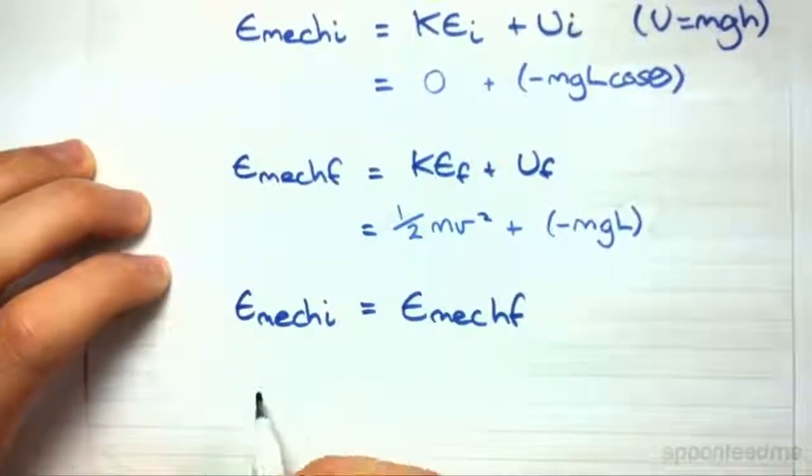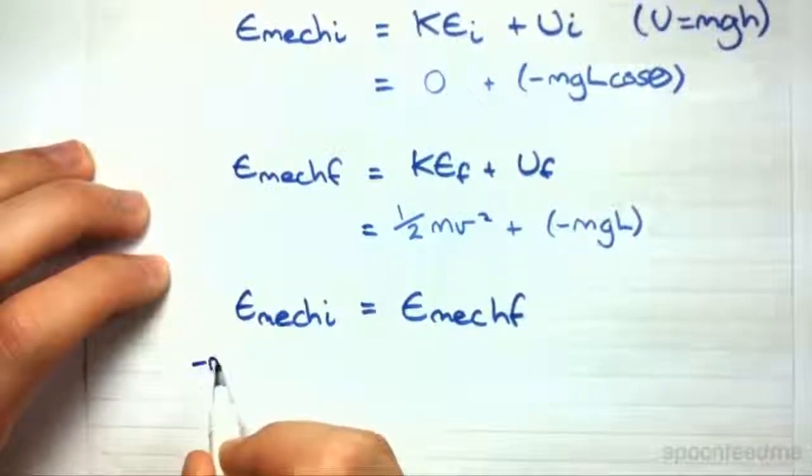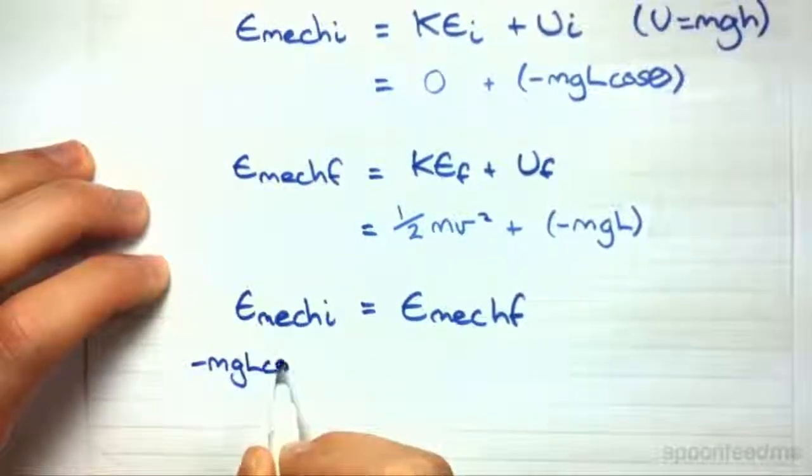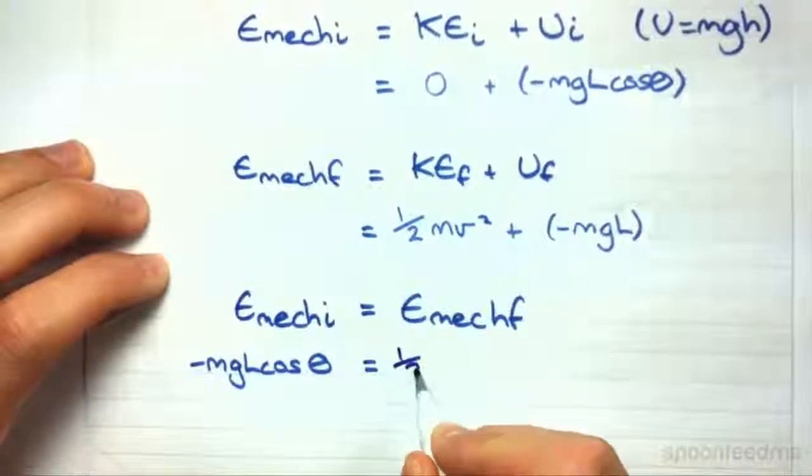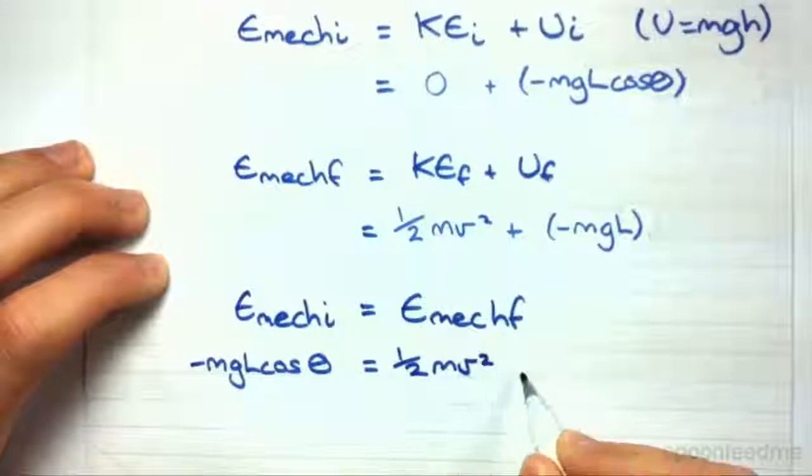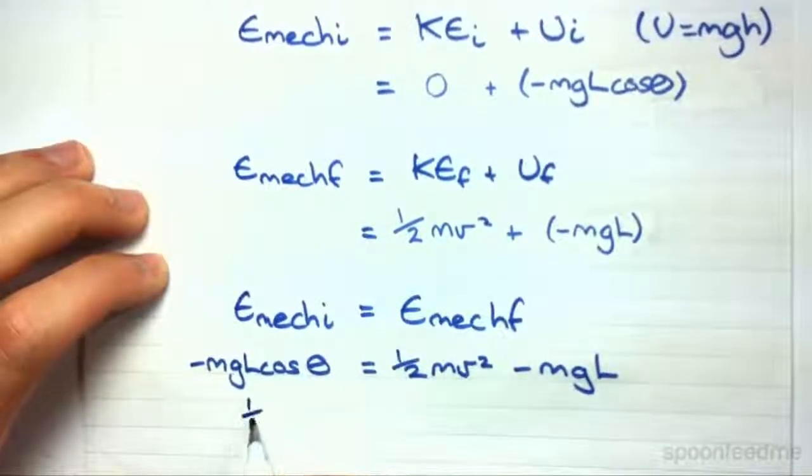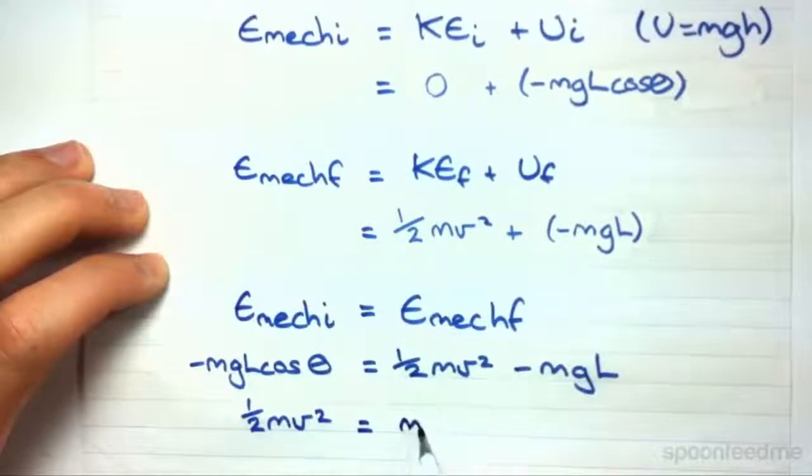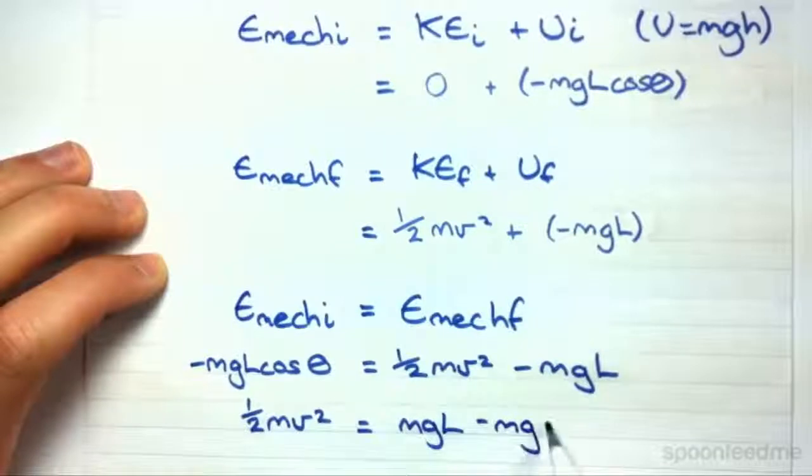Let's sub in what we know about the initial mechanical energy. So that's just minus mg L cos theta, and that's equal to the final. Let's sub that in. Now I'm going to move this across to this side because we're trying to find v squared. I'm going to put the v squared on this side.